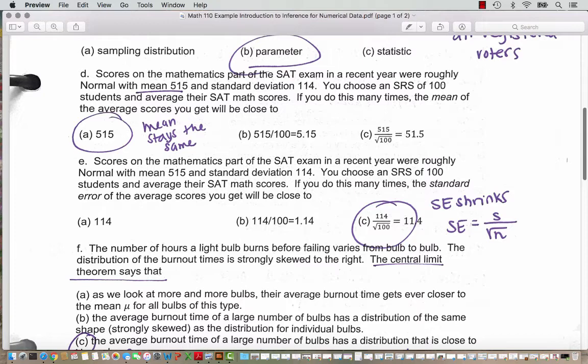So when we do a sampling distribution, the mean stays the same. When we're taking 100 students, we know that when we take 100 students and average their scores, the distribution is going to become more compressed or more narrow because the average of 100 students is going to be much closer to the population mean than just the score of one student. But the mean, the center value still stays the same.